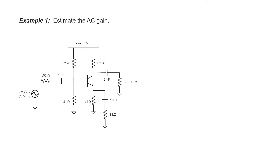First of all, we don't have much of an input voltage divider here. At the output side, we do have a bit of a voltage divider. That's going to drop my gain by a factor of 2 or so. But because we have a gain of about 2, I'm predicting that my overall gain from this circuit is going to be roughly 1.